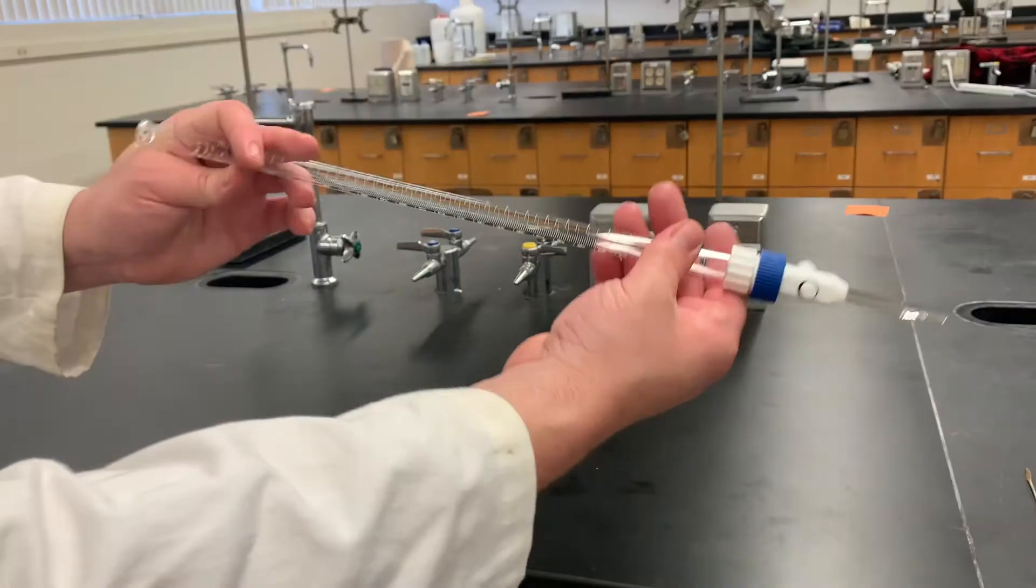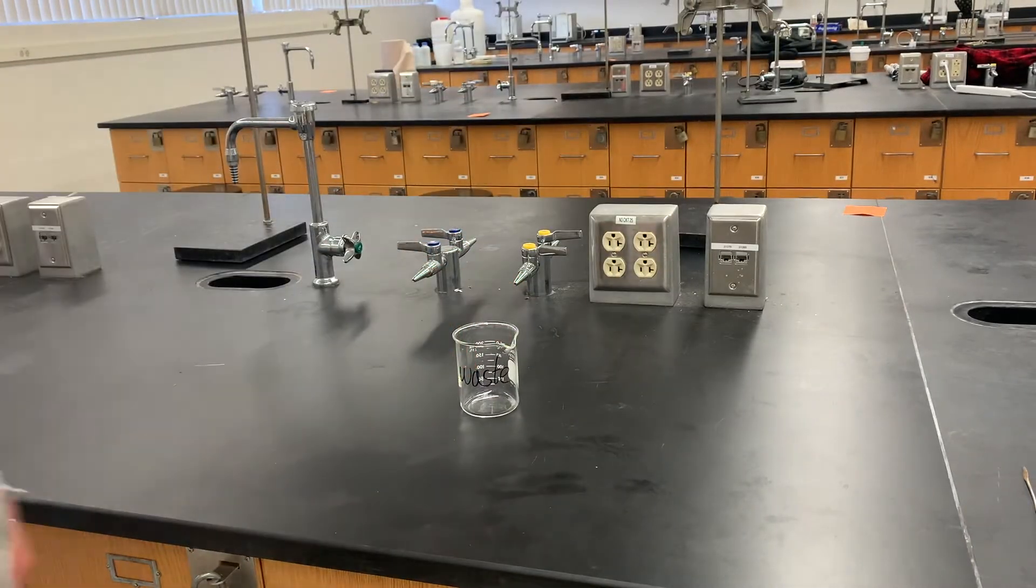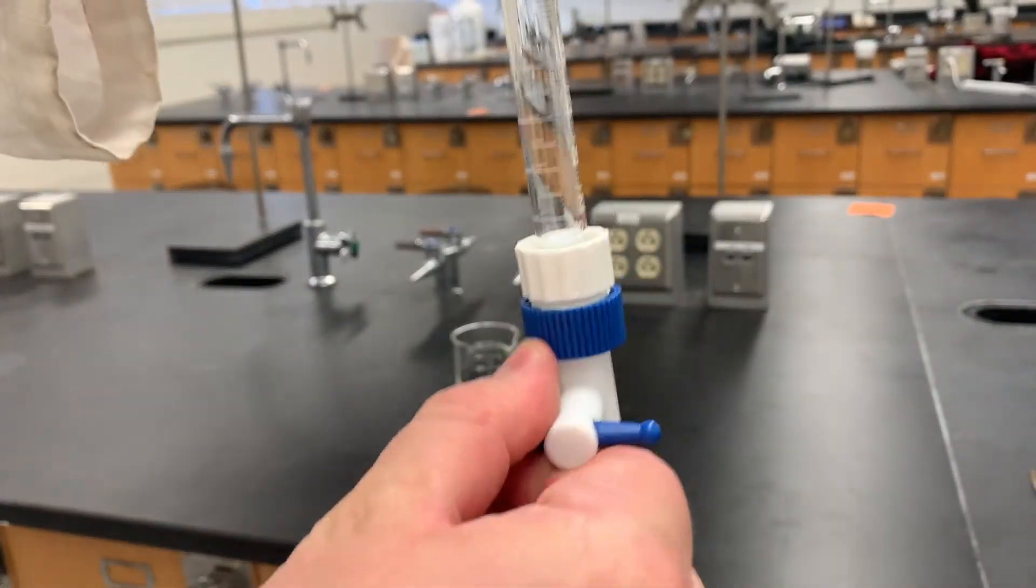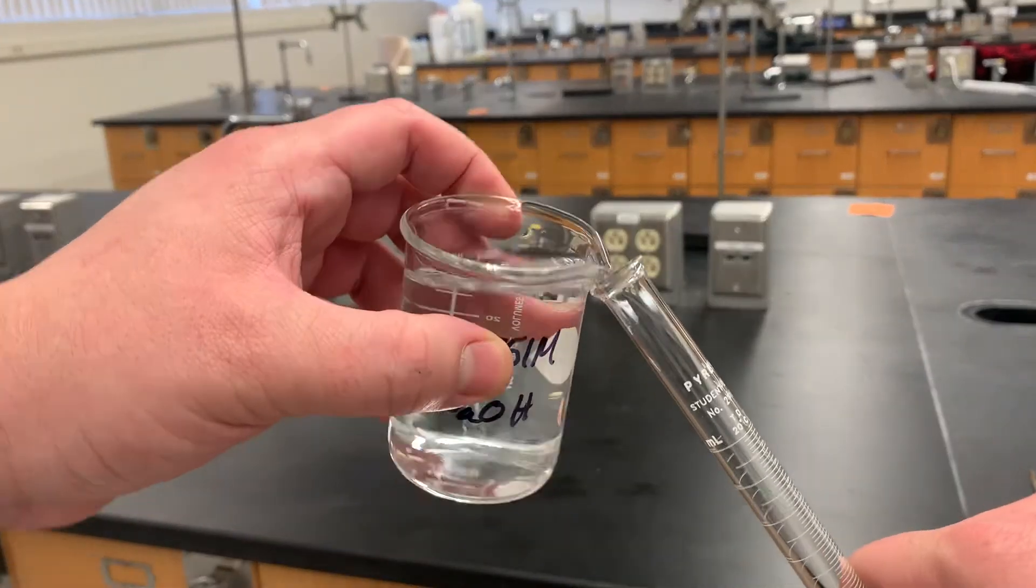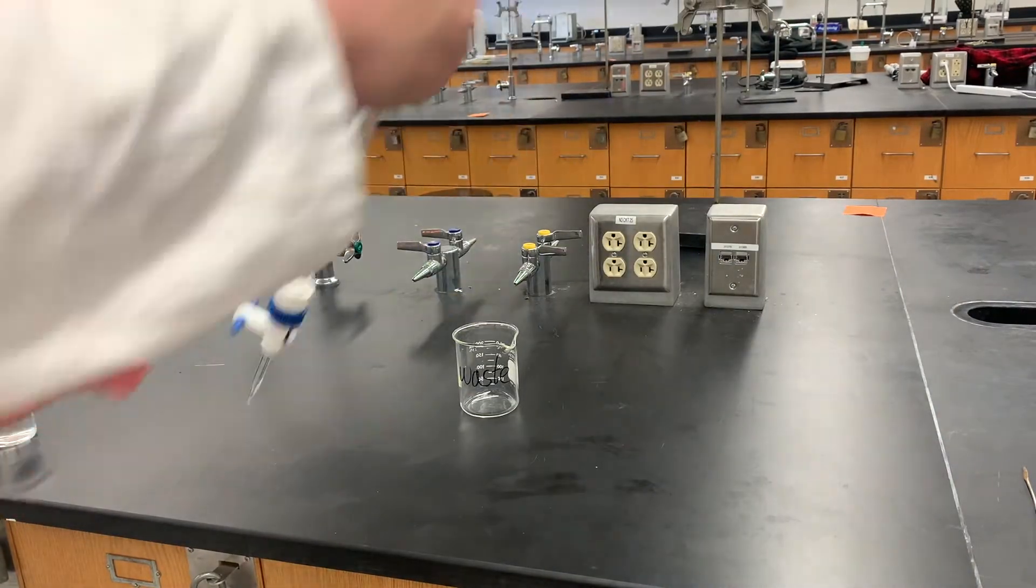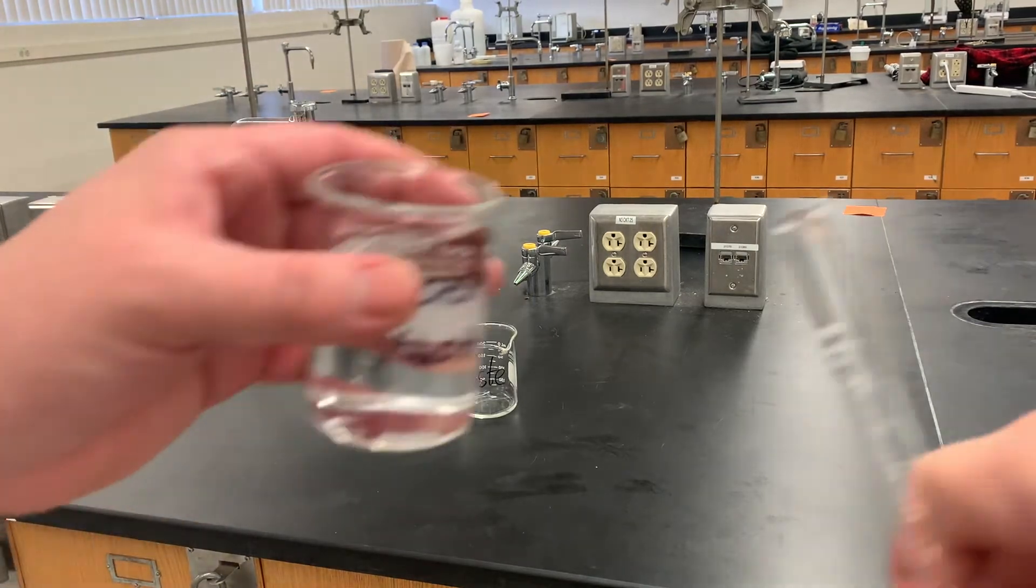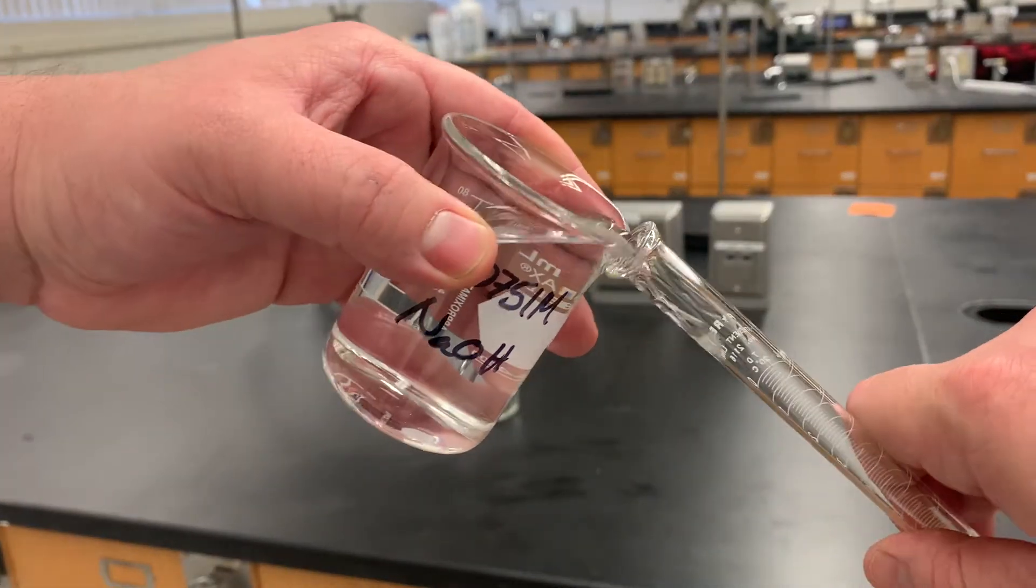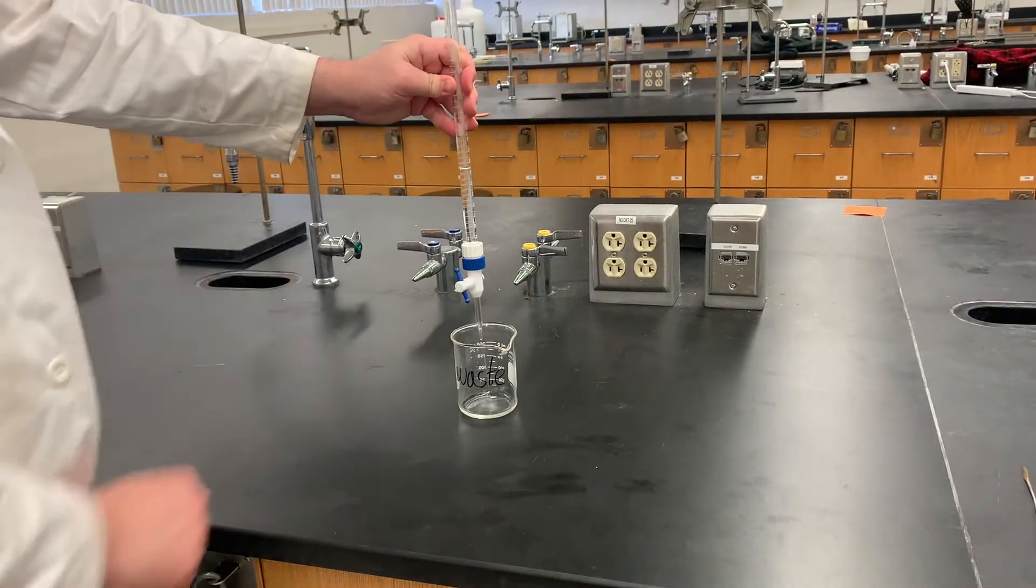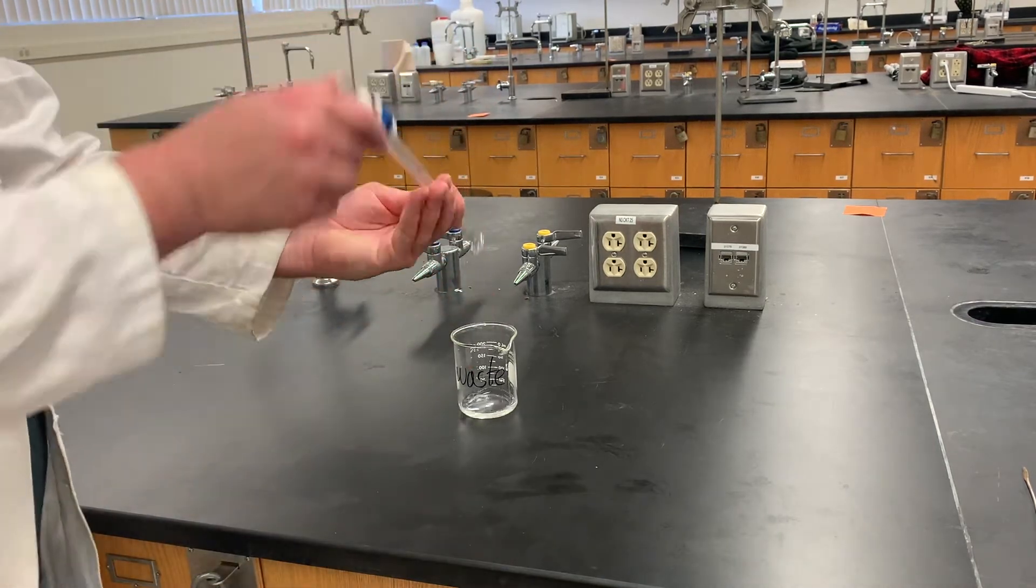Next, we're going to need a burette. We want to clean this out. So we will need a waste container right there. Take our burette here. Make sure that it's closed. Add some in. Swirl, swirl, swirl. Pour out. Repeat. Let some drain. And when you get sick of that, you can just force that out.